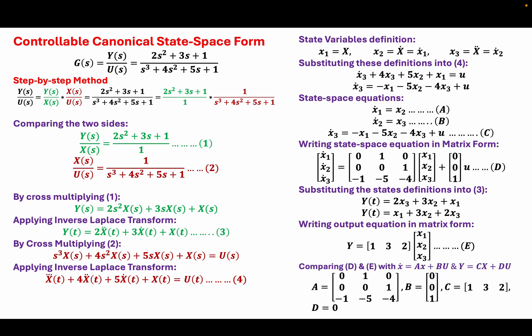So comparing D and E with the general state-space model, which is x dot equals A x plus B u, and Y equals C x plus D u, I will have my A, B, C, D matrices.